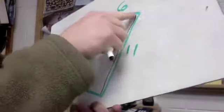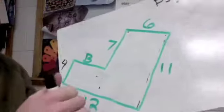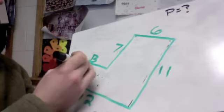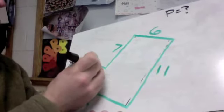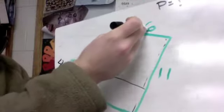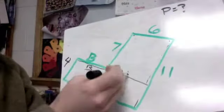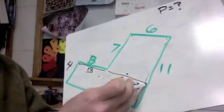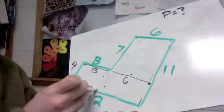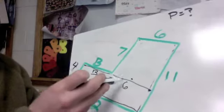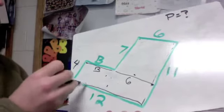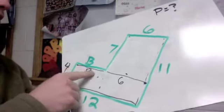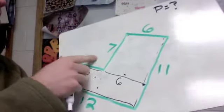Now we need to figure out what B is. Going in the same direction as B, we have B from here to here, and we know this portion is 6 in length. Altogether, from here to here has to be 12. So 6 and something equals the whole length of 12 — 6 plus 6 is 12, so B would be 6.